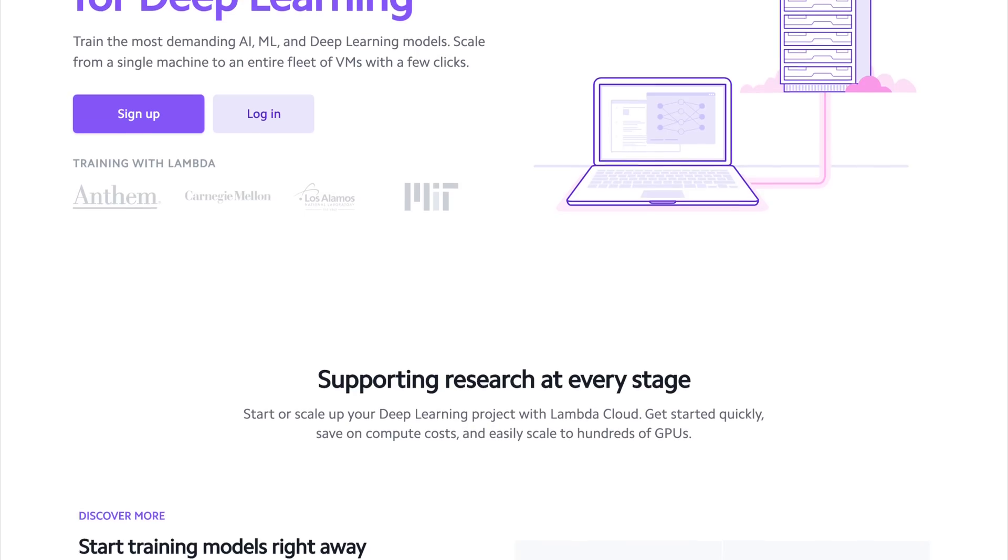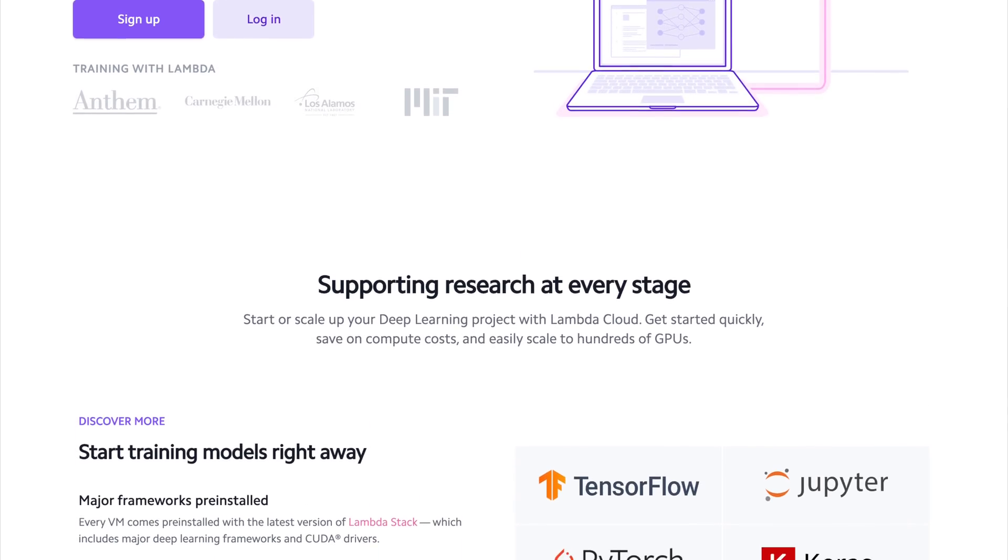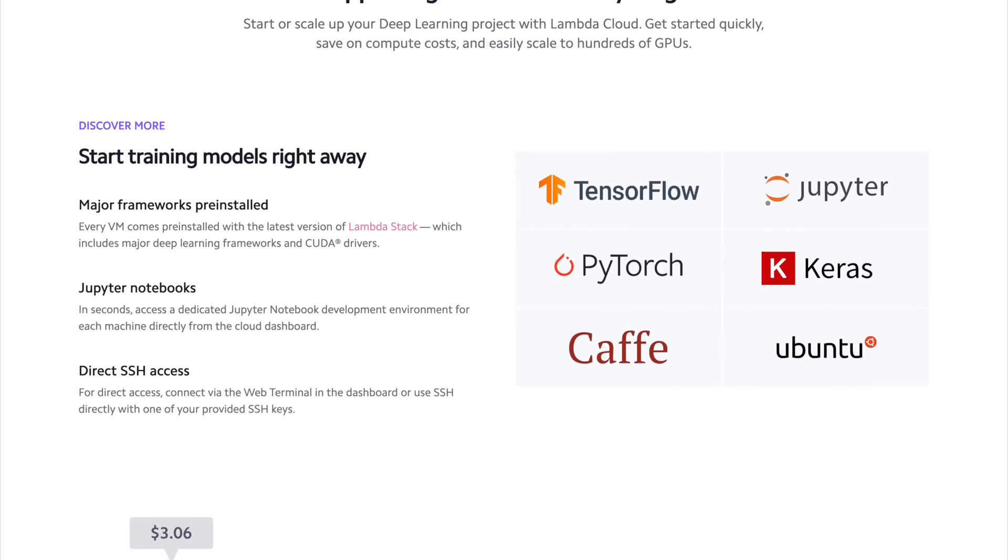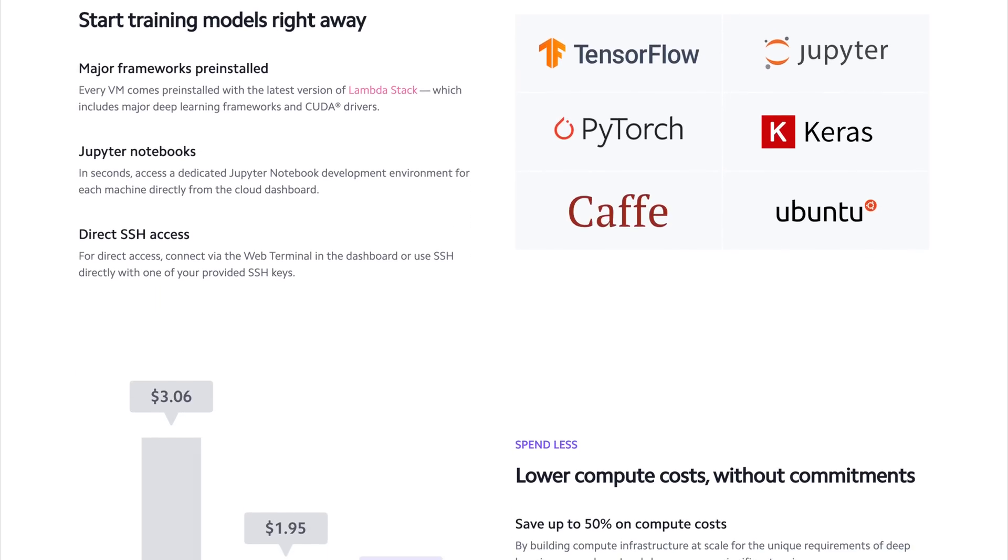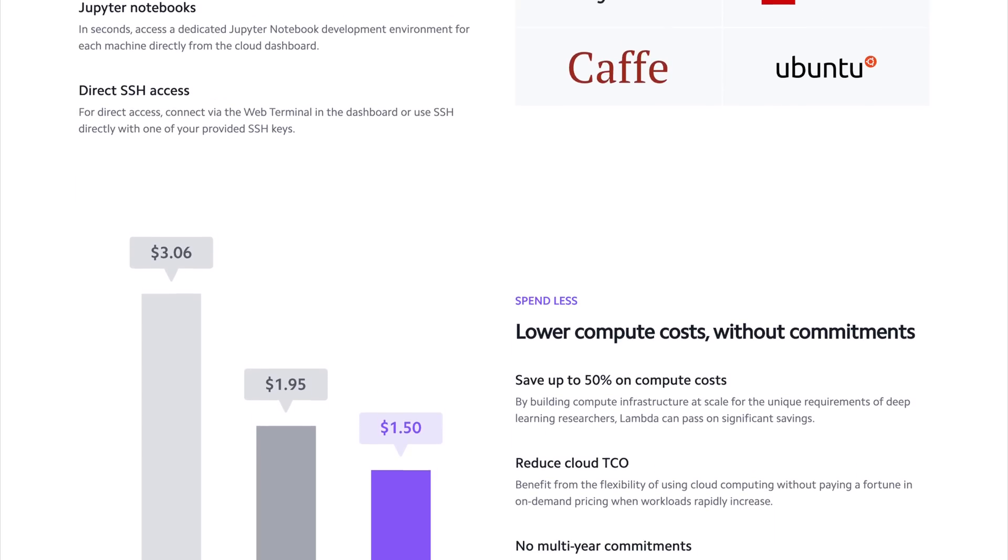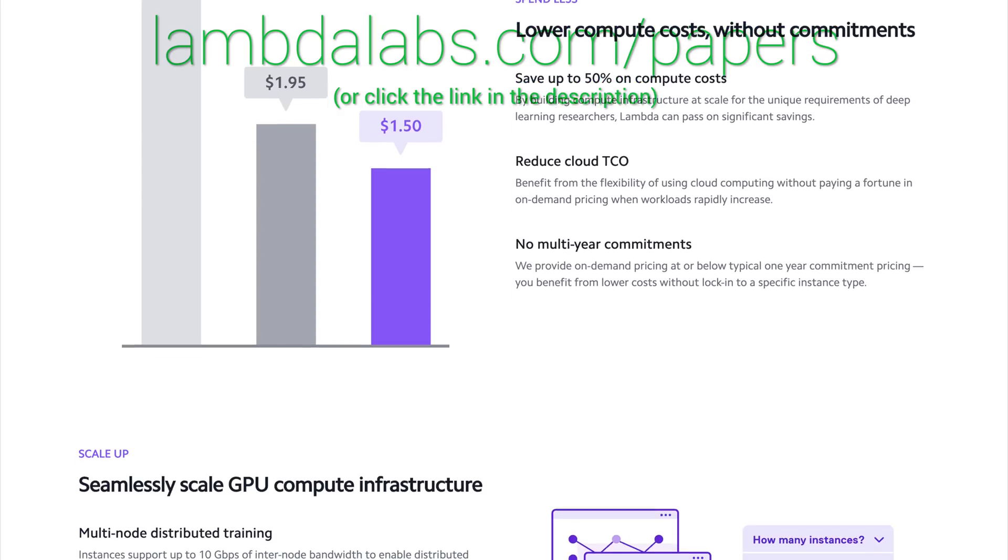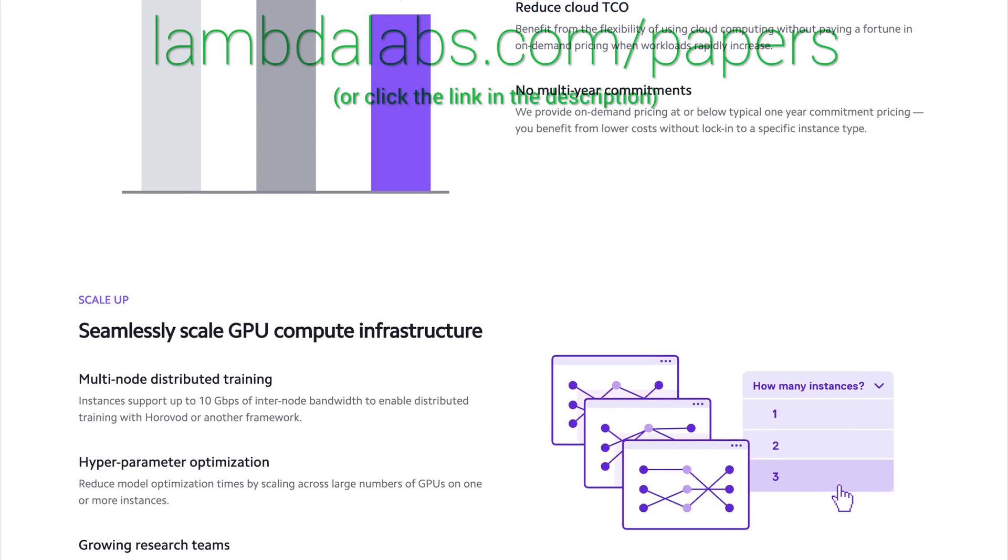They have recently launched Quadro RTX 6000, RTX 8000, and V100 instances, and hold on to your papers because Lambda GPU Cloud can cost less than half of AWS and Azure. Plus, they are the only cloud service with 48 Gigabyte RTX 8000.